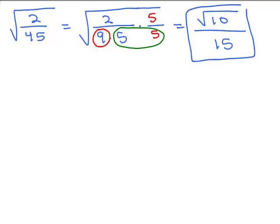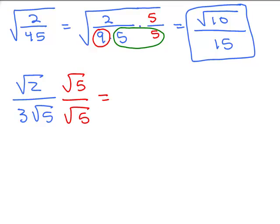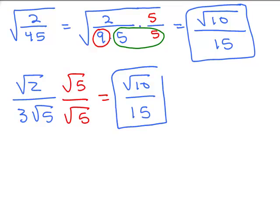That's a shortcut way of doing it. You could also first simplify the square root of 45, which is 3 square roots of 5, and then multiply the numerator and denominator by square root of 5. You'll get exactly the same answer: square root of 10 over 15. Make sure you do it in a way that makes most sense to you. We're going to go on to more problems like this in the next video, where we're working with higher roots and rationalizing the denominator when there's not just a simple square root in the denominator.